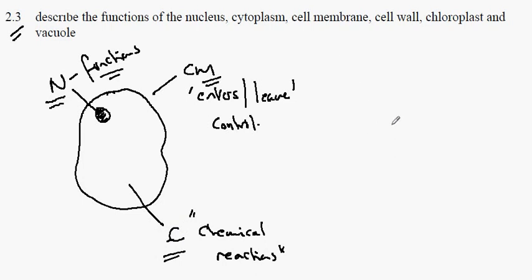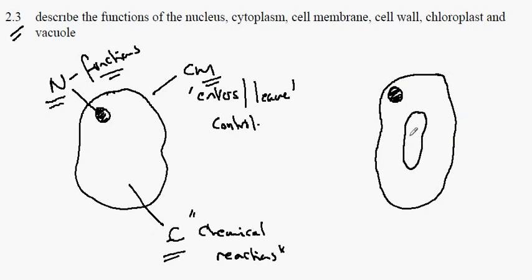Plants have additional features. We have the cell membrane, the nucleus and the cytoplasm. But in addition, we have the vacuole. Let's put a V there.